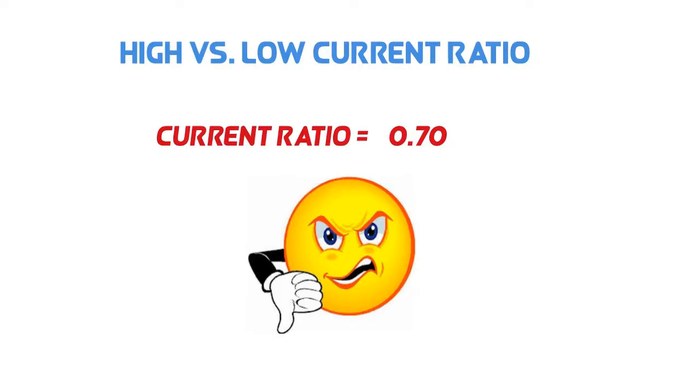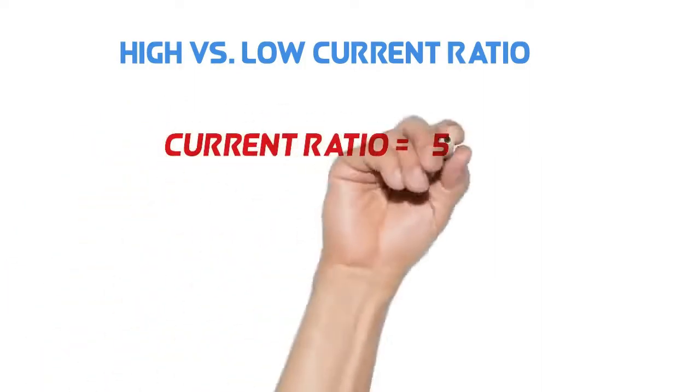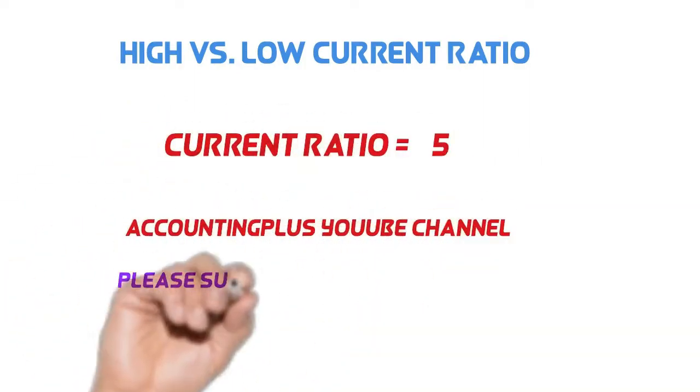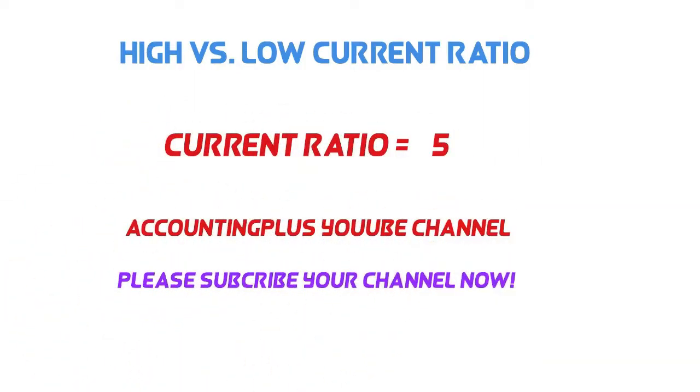The organization may be able to borrow against those prospects to meet current obligations. If the current ratio is too much higher than the industry average ratio, it is again not good for the business. If the value of the current ratio is considered high, then the company may not be efficiently using its current assets, specifically cash, or its short-term financing options.